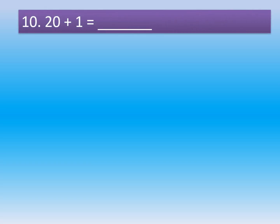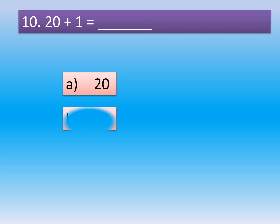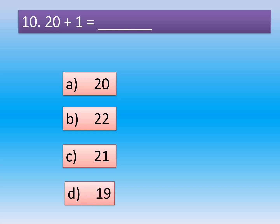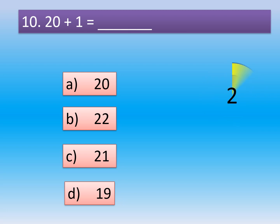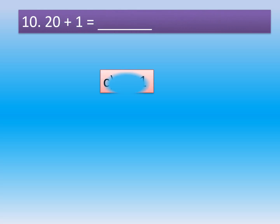Question 10: 20 plus 1 is equal to dash. Option A: 20. Option B: 22. Option C: 21. Option D: 19. The correct option is Option C, 21. 20 plus 1 is equal to 21.